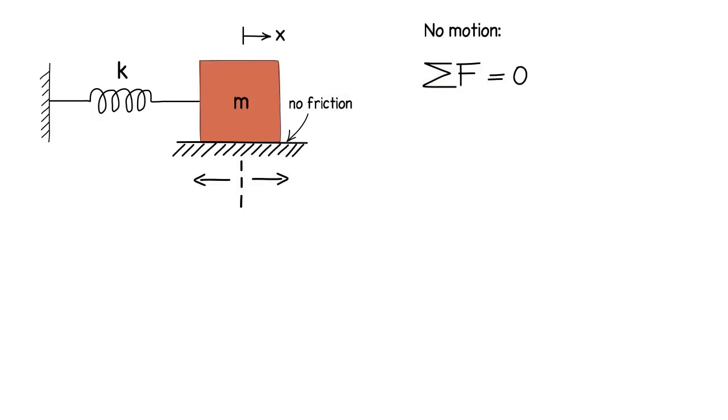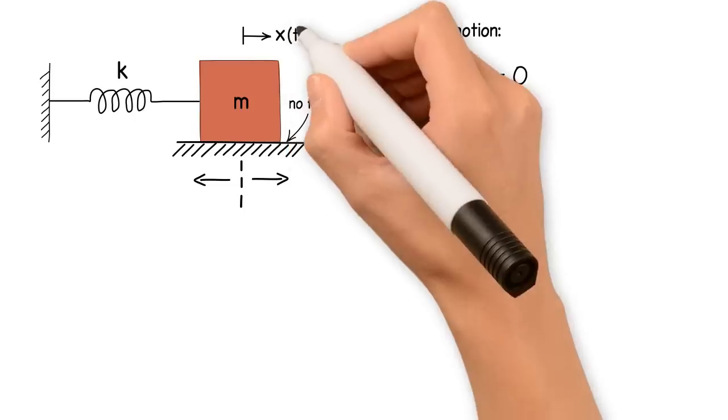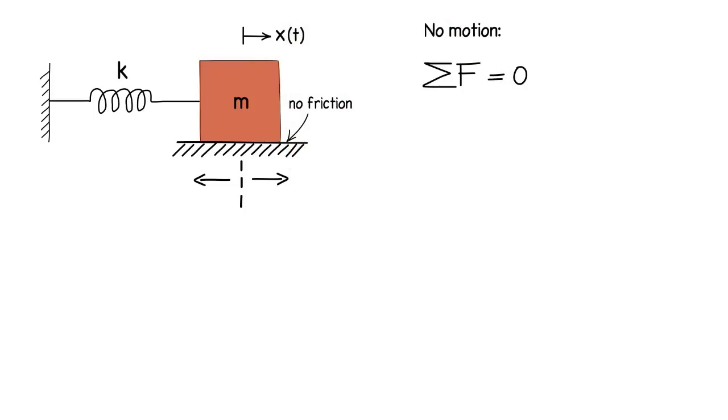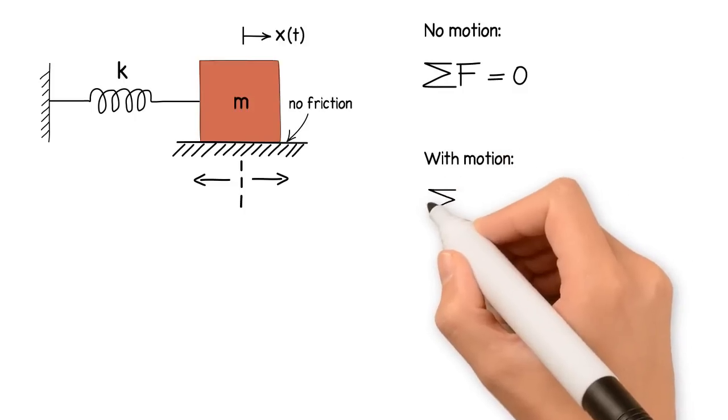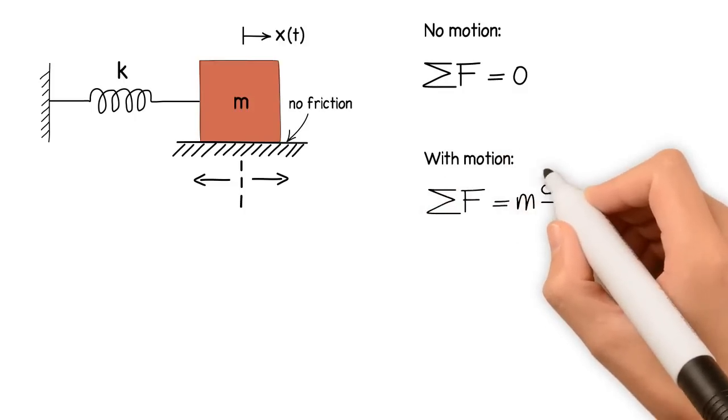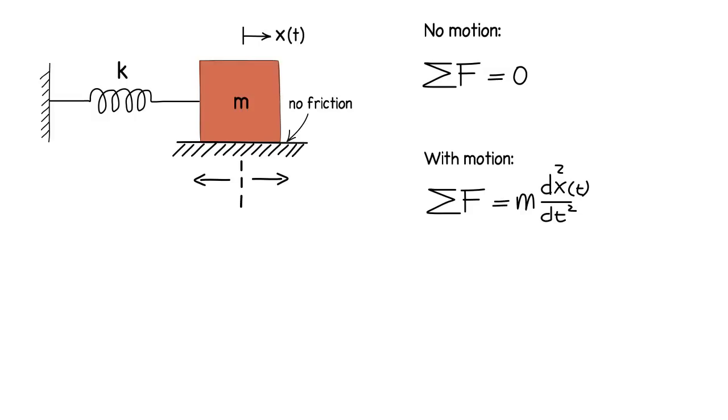So the displacement of the mass is a function of time. And now with the system in motion, the resultant force equals m d²x over dt², which is the mass multiplied by the acceleration, and we can denote this as m x double dot.